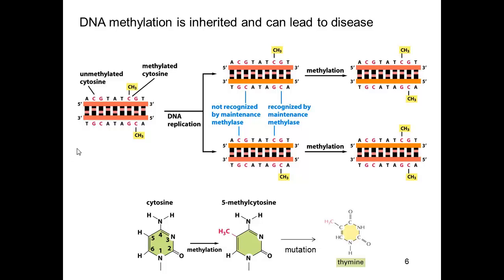Here we see the structure of cytosine, and here is a methyl group that gets put on the 5 position — we call this 5-methyl-C. There are a few other locations of methylation; for instance, A can also get methylated. But the most important of these is 5-methyl-cytosine.